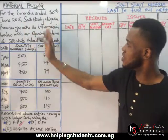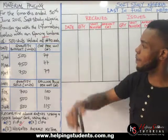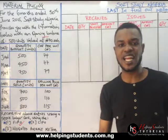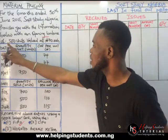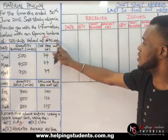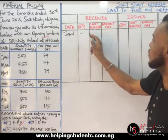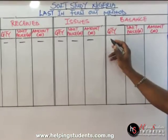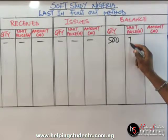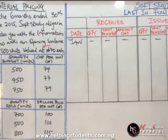For the six months ended 30 June 2015, South Study Nigeria provides information below with an opening balance. I told us that each time we have an opening balance in the question, it goes direct to the balance section. So, 500 units valued at 70 Naira each. For January, we'll have no transactions, so we come to the balance section: 500 at 70, which gives us 35,000 Naira.